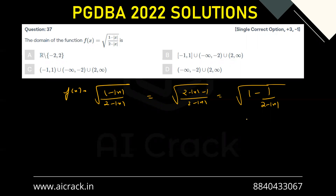Our basic condition is: 1 over (2 minus |x|) is always less than or equal to 1. Now I cannot do direct cross multiplication here because 2 minus |x| can be either positive or negative.